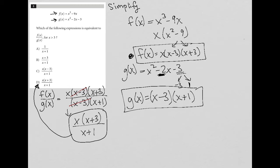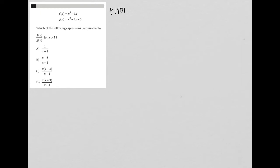There is another way to answer this question — a process I call 'plug in your own number.' I can always use this if and only if I see variables in the answer choices. We pick a number for x. Notice the question says x is greater than 3, so I'm going to choose x = 4, and plug it into the original question.